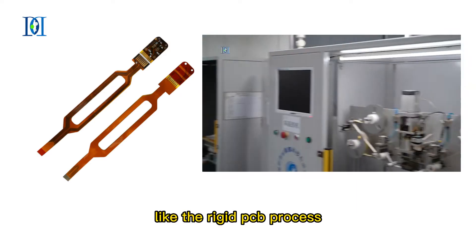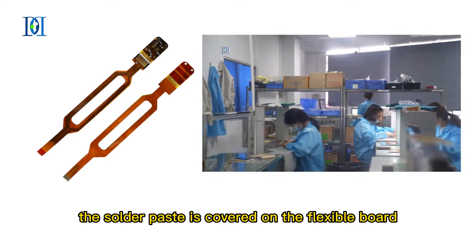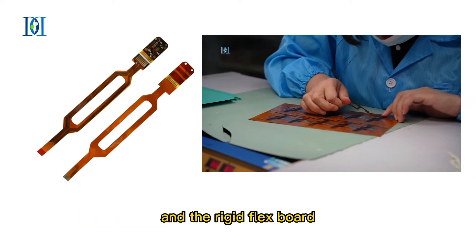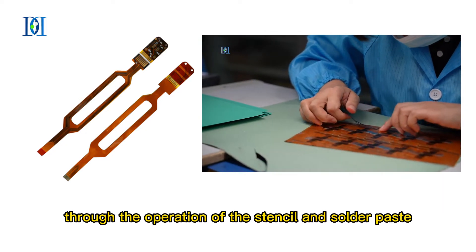Like the rigid PCB process, the solder paste is covered on the flexible board and the rigid flex board through the operation of the stencil and solder paste printer.